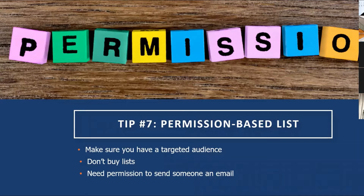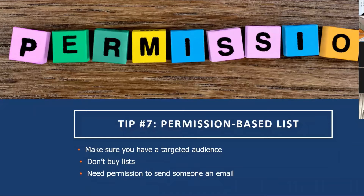Moving on to tip number seven: make sure you have a permission-based contact list. Newsletter software tools enable you to send the right message to the right people at the right time, and having a permission-based list is the first and most important step. A permission-based list simply means that you have permission before adding a contact's name to your email list. It's a simple concept, but it has huge ramifications. Anytime you send an electronic newsletter to someone without their permission, or who has not requested it, you are sending spam. To avoid being an accidental spammer, never send your newsletter to someone without their permission.